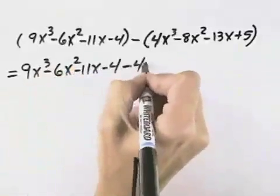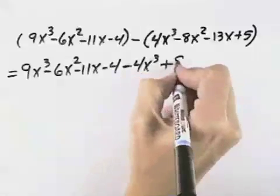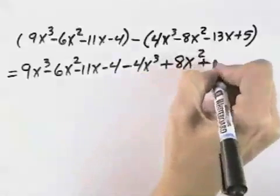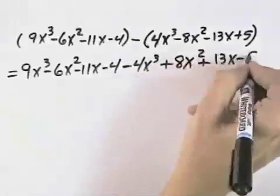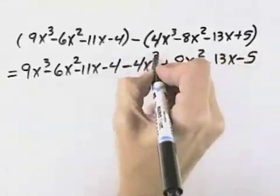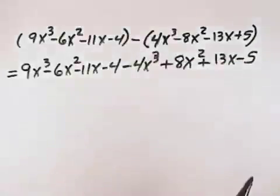But here's where we now have a minus 4x cubed, a plus 8x squared, a plus 13x, and a minus 5 when we take the opposite symbol in front of each of our terms.